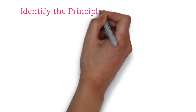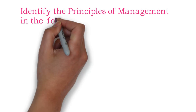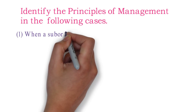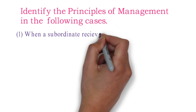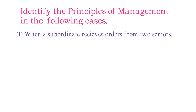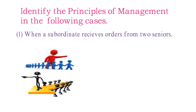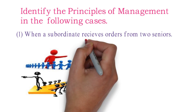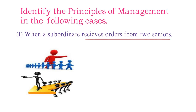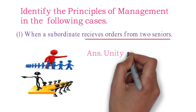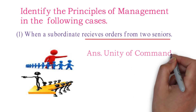Let's see a few examples first and then continue with the keywords. Number one: when a subordinate receives orders from two seniors. Here the keywords are 'receives orders from two seniors,' hence the principle of management violated here is Unity of Command, that is one boss.